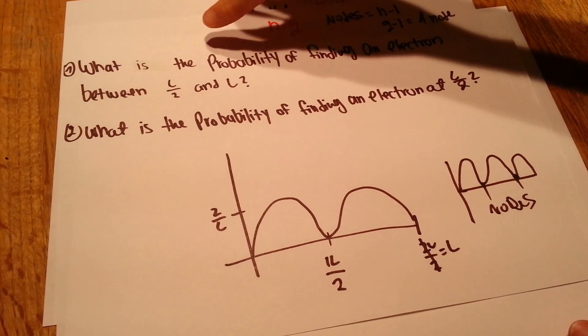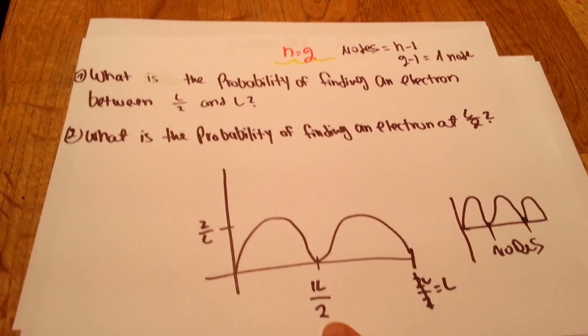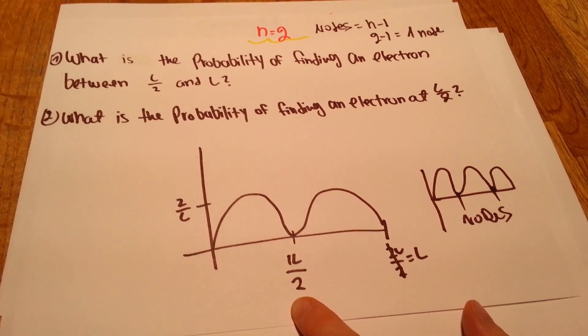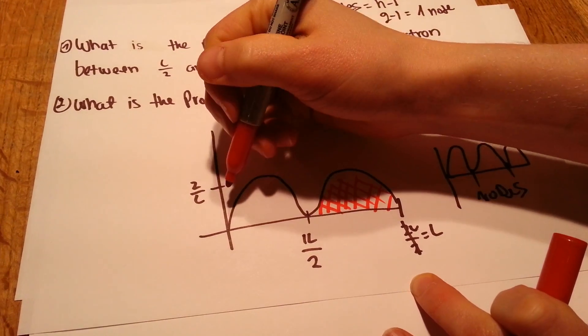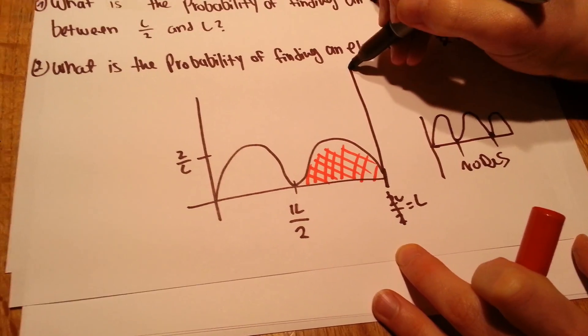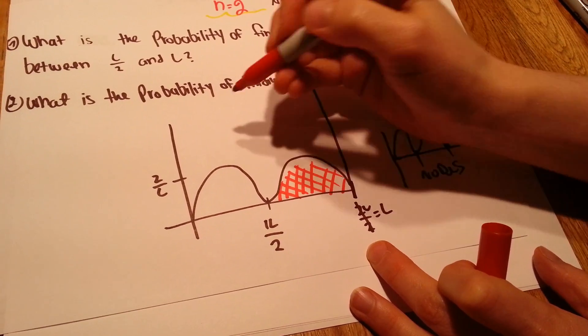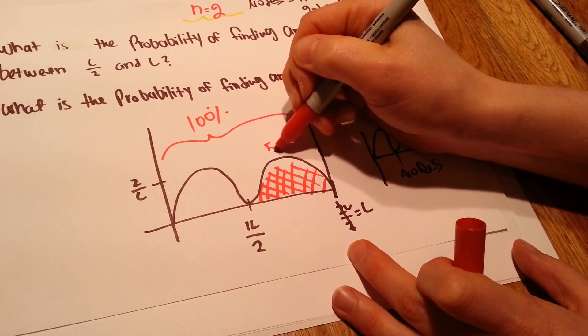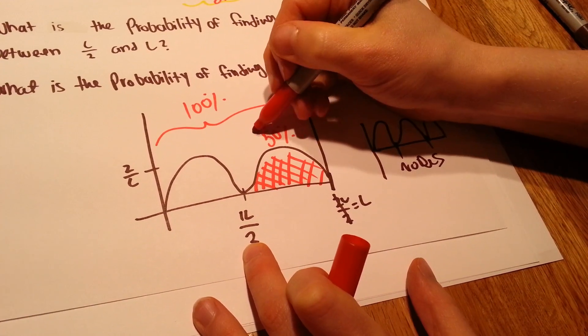Okay, so now looking at the first question. What is the probability of finding an electron between L over 2 and L? They want to know what's the probability of finding an electron here. Well, we know that the electron must be somewhere in the box. The electron cannot escape the box because we have really high walls. The electron can't just run away. So everything all together is 100%. And half of that would be 50% between L over 2 and L. So this is our answer, 50%.